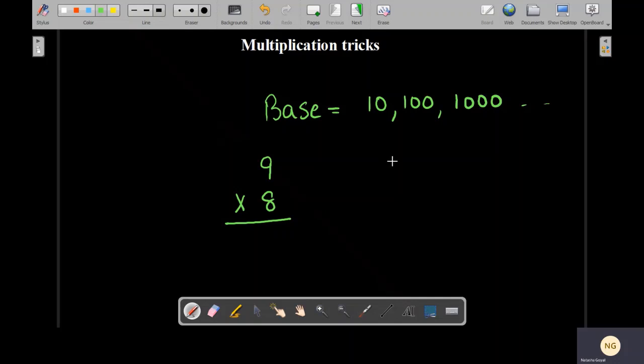Now we'll start subtracting the base from each of these numbers. So 9 minus 10 gives you minus 1. 8 minus 10 gives you minus 2. Now the next step is we'll create a column and write minus 1 and minus 2 in front of these two numbers.